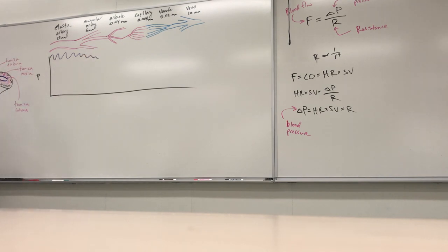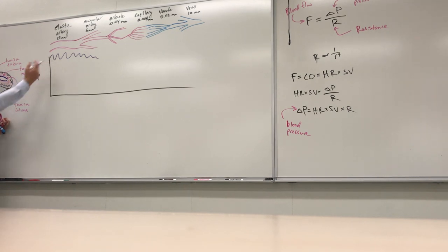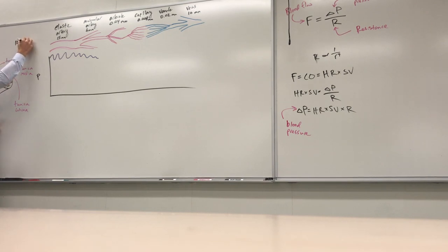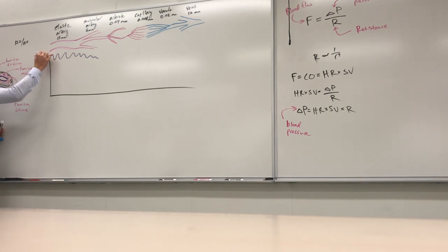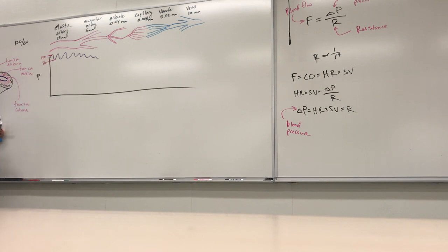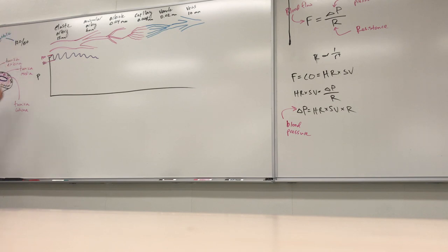For someone with a blood pressure of 120/80: 120 is the systolic pressure — the pressure in the arteries when the heart contracts — and 80 is the diastolic pressure — the pressure when the heart is relaxed. Units are millimeters of mercury.